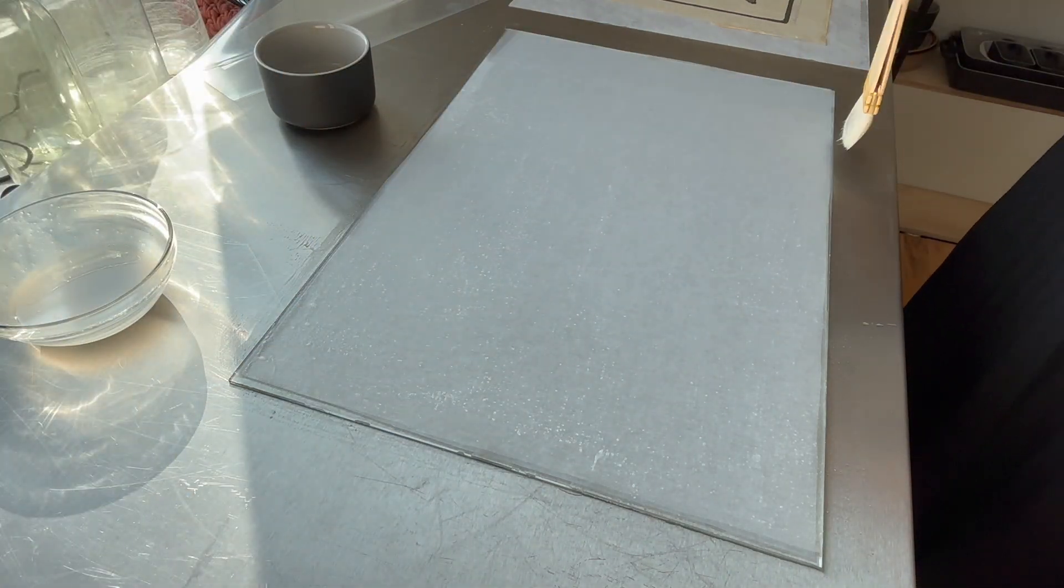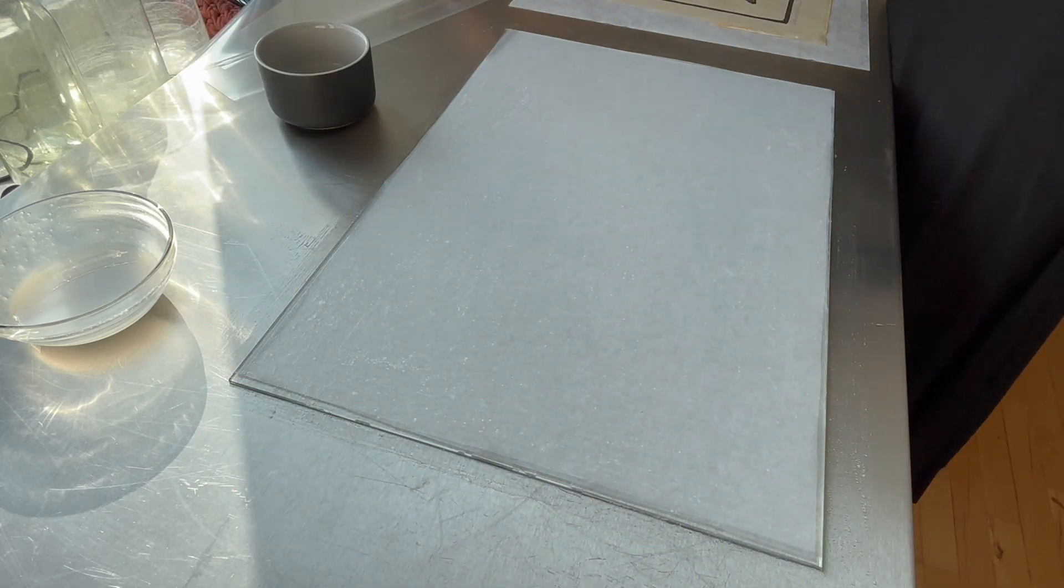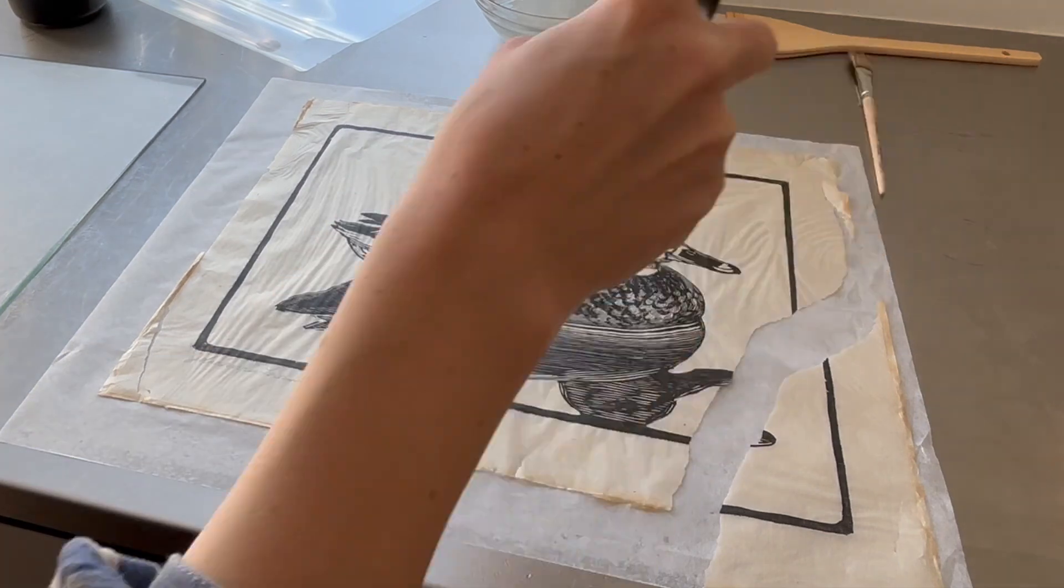On top of the Koso paper, another layer of wheat starch paste is applied, and now the stack is ready for the object to be lined.